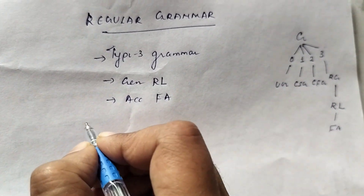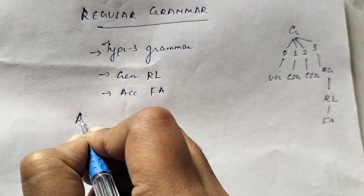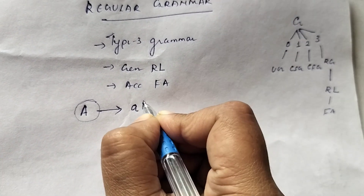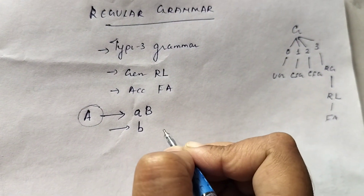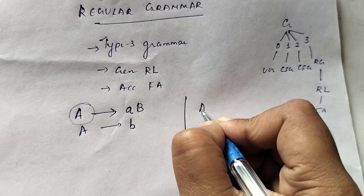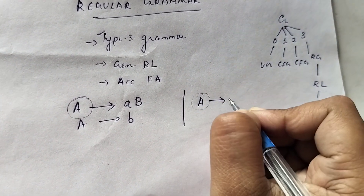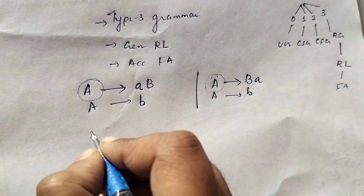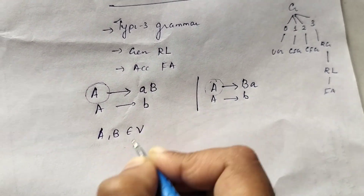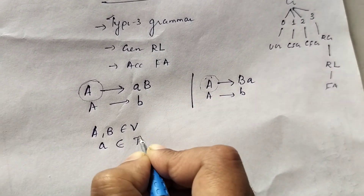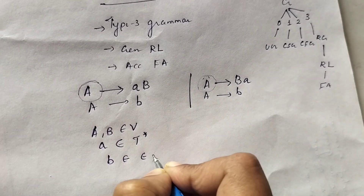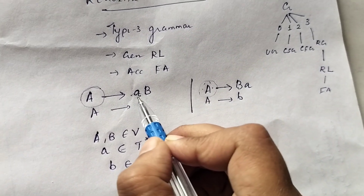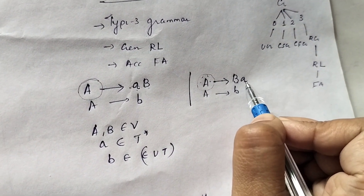The production rules must be in a specific form: the LHS part will be a single non-terminal, and the RHS part will be either a single terminal followed by a single non-terminal, or a single terminal only. Alternatively, the LHS is a single non-terminal and the RHS is a single non-terminal followed by a single terminal, or a single terminal only. Here, the variables are non-terminals, 'a' is any terminal, and 'b' is either epsilon or any terminal.